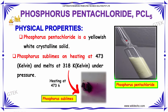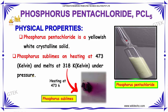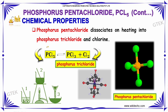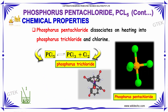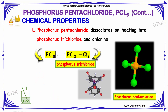Now let's talk about phosphorus pentachloride. Its physical property: phosphorus pentachloride is a yellowish-white crystalline solid. It sublimes on heating at 473 K and melts at 318 K under pressure. On heating, phosphorus pentachloride dissociates into phosphorus trichloride and chlorine.